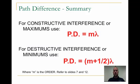So in summary, we have two equations. We know that constructive interference happens where the path difference is m times lambda, and destructive interference happens where the path difference is m plus one-half quantity times lambda, where m is the order.